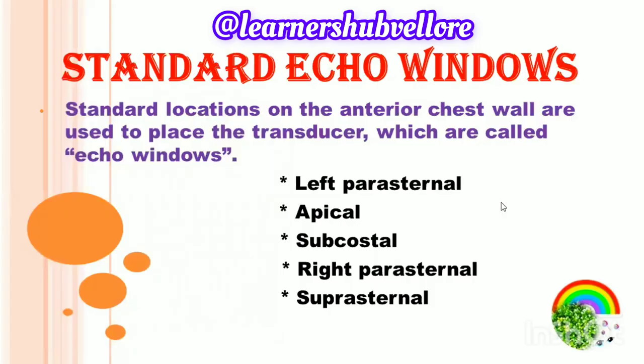There are five types of standard echo windows: left parasternal, apical, subcostal, right parasternal, and suprasternal.